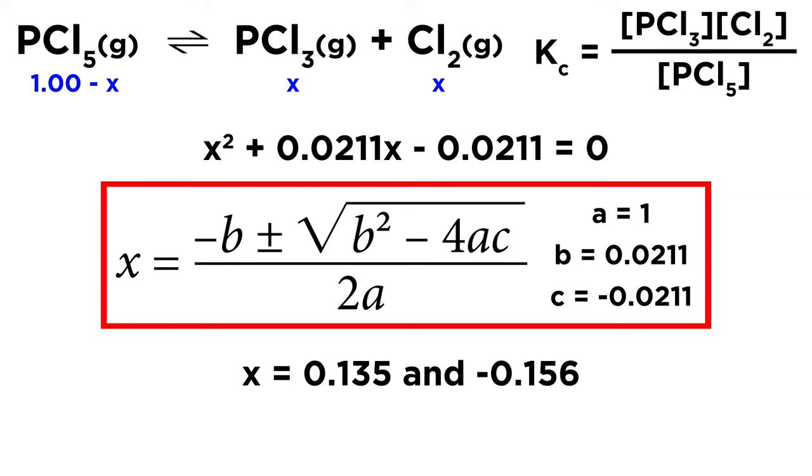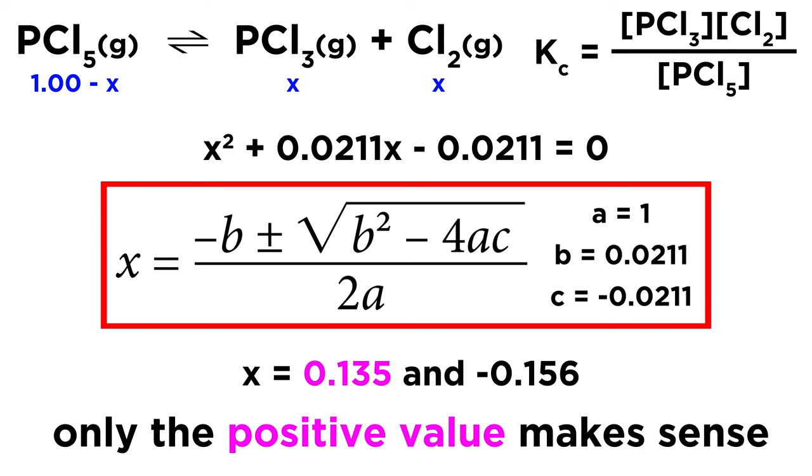So we need to figure out which one makes sense. Well, as it turns out here, only the positive value makes sense. Because if X were negative, that would mean that PCl5's equilibrium concentration would be greater than how it started, and the equilibrium concentrations of the products would be negative, which doesn't make any sense. So we get rid of that negative value and keep X equals 0.135.